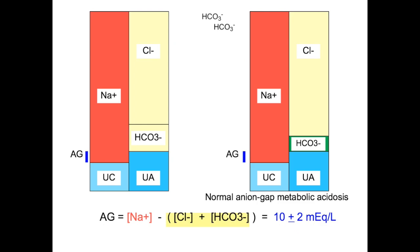Serum bicarbonate concentration decreases, serum chloride increases to compensate, and the anion gap remains normal, about 10 milliequivalents per liter.